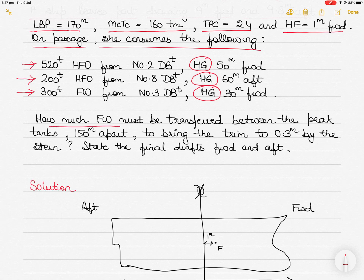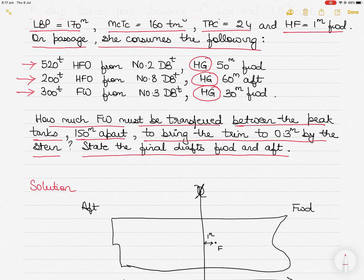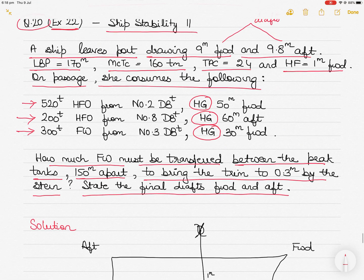You have to find how much fresh water must be transferred between the peak tanks, which are 150 meters apart. You don't add or discharge any cargo — you only transfer fresh water from one peak tank to the other. You have to bring the trim to 0.3 meters by the stern, and state the final drafts forward and aft.